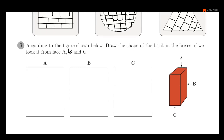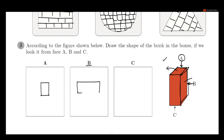Question 3: According to the figure shown below, draw the shape of the brick in the boxes. If we look at it from face A, B, and C, you can see the brick face. You can see a square or rectangle. In the rectangle, you can draw the rectangle. So, the three faces of the brick — you can draw the rectangle.